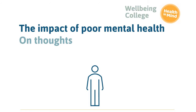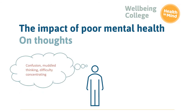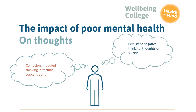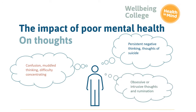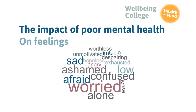Whilst every person is individual, there are some common ways in which poor mental health can affect someone's thoughts. This might include confusion, muddled thinking, difficulty concentrating, persistent negative thinking, and perhaps thoughts of suicide. Obsessive or intrusive thoughts and rumination — where thoughts go round and round in our heads with no real end point — are also common. A sign of poor mental health can also be intense or persistent versions of the normal range of emotions we all feel. It's common to feel anxious, worried or sad from time to time, but not to the extent these feelings are continuous for weeks at a time or interfere with our day-to-day lives.